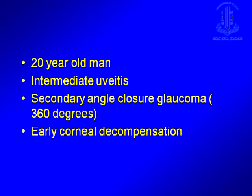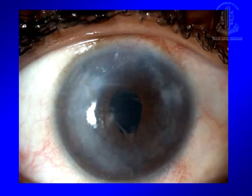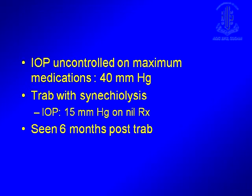Here is a 20-year-old man with intermediate uveitis. He had secondary angle closure 360 degrees and early optic nerve cupping. He presented with peripheral synechiae all around. We did a trabeculectomy after releasing the synechiae superiorly. His intraocular pressure before that was 40 mmHg. We did a trabeculectomy with synechiolysis and the pressure dropped to 15 mmHg.